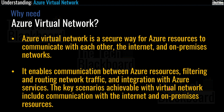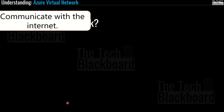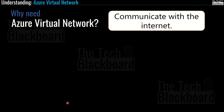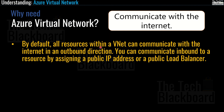A key scenario achievable with virtual networks is communication with the internet. By default, all resources within a virtual network can communicate with the internet in an outbound direction, and you can communicate inbound to a resource by assigning a public IP address or a public load balancer.